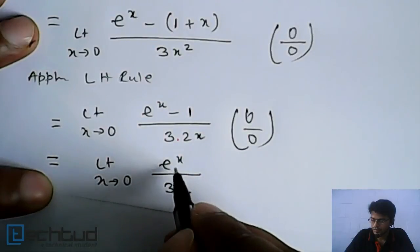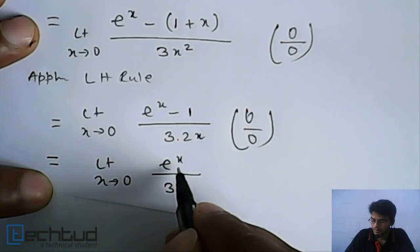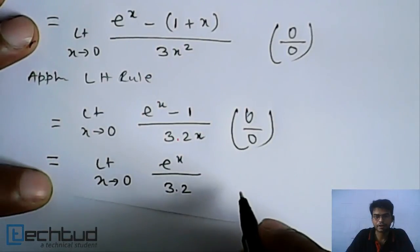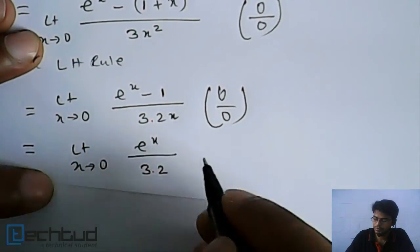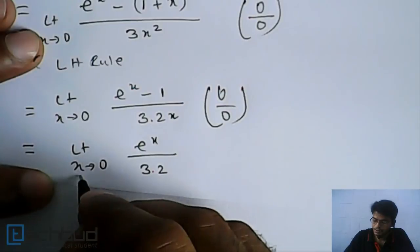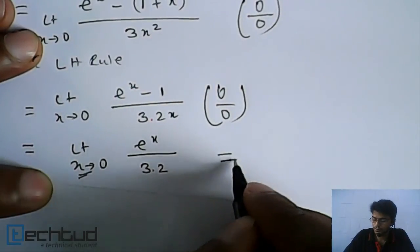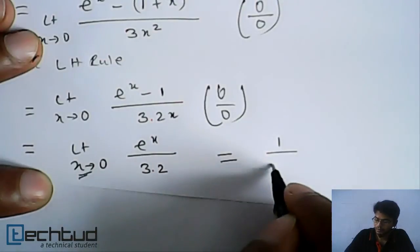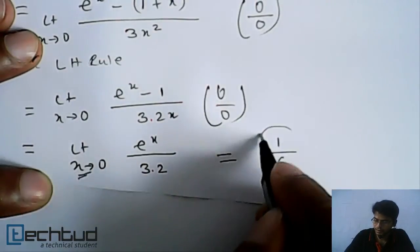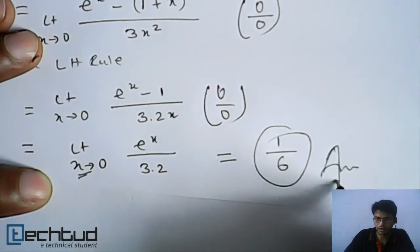So now if you see, this is not an indeterminate form. So now we will put this value, x equal to 0, which will be equal to e to the power 0 which is 1 upon 6. So 1 upon 6 is the answer.